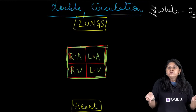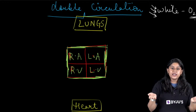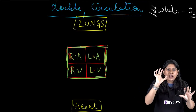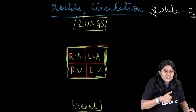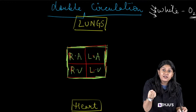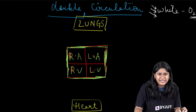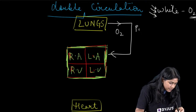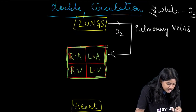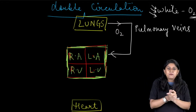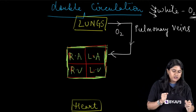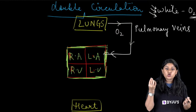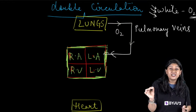As you breathe in, oxygen goes into your nostrils and rushes towards your lungs. In the alveoli there is an exchange of gases. Once oxygen is in the alveoli it goes into the blood vessels and comes to the left atrium with the help of the pulmonary vein. The pulmonary vein carries oxygen-rich blood to the left atrium. Left atrium happily takes the oxygenated blood.